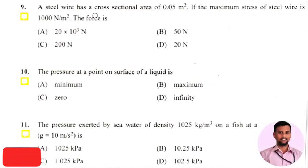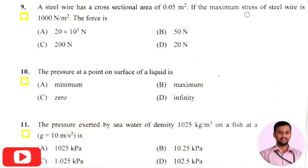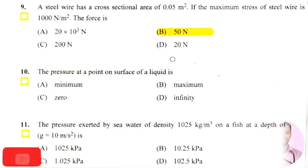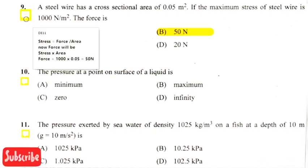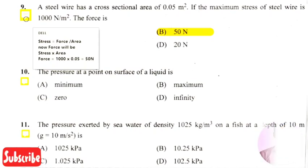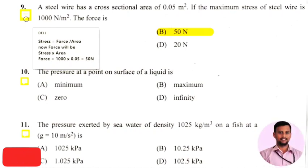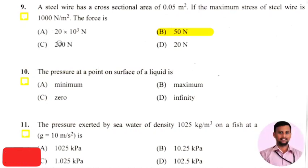The next question: a steel wire has a cross-sectional area of 0.05 m². If the maximum stress of the steel wire is 1000 N/m², the force — the right answer is option 2, that is 50 Newton. We know that stress equals force divided by area. Multiplying stress by area: 1000 × 0.05 = 50 Newton.